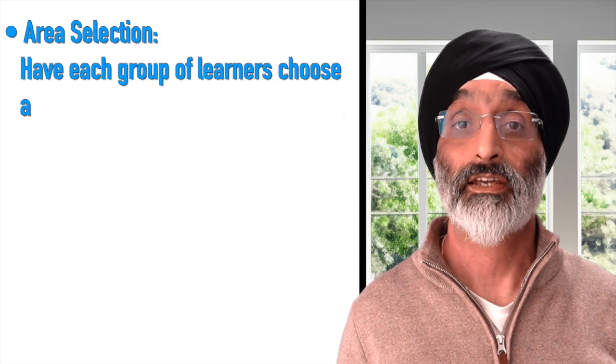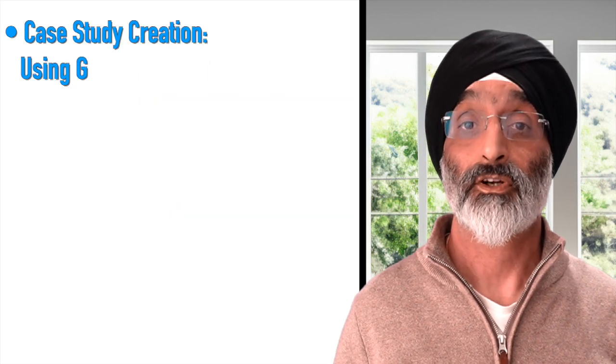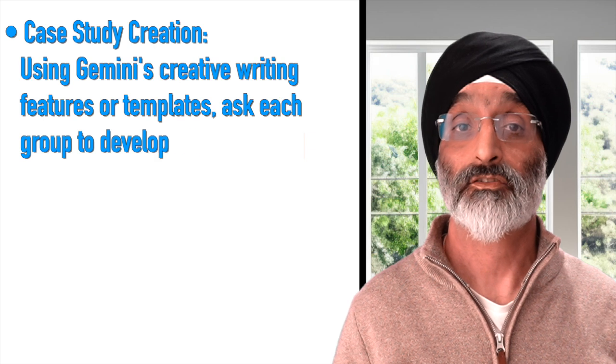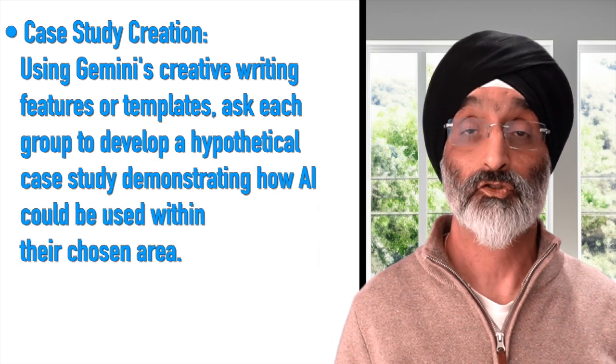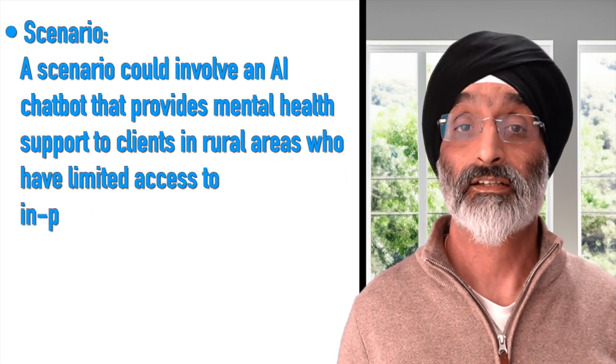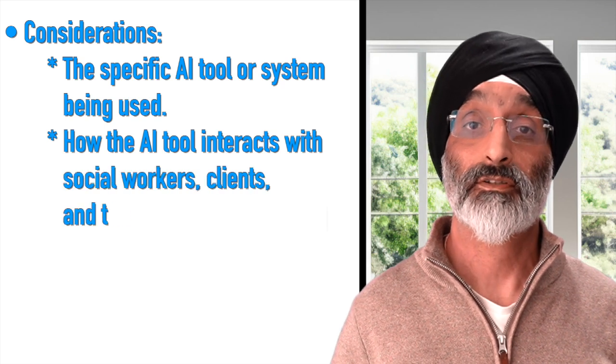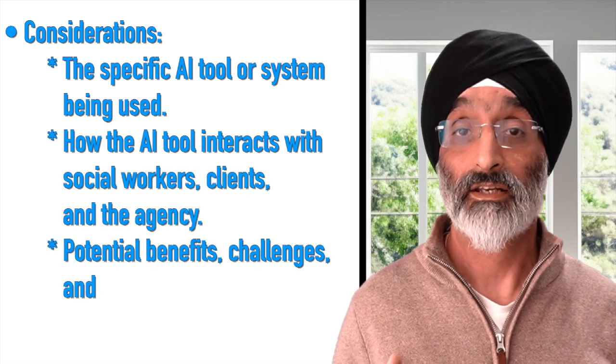Have each group of learners choose a specific area of social work practice like child welfare, mental health, elderly care, or criminal justice. Using Gemini's creative writing features, ask each group to develop a hypothetical case study demonstrating how AI could be used within their chosen area. The case study should present a realistic scenario where an AI tool or system is being implemented. For example, a scenario could involve an AI chatbot that provides mental health support to clients in rural areas who have limited access to in-person services. Another scenario could involve an AI system that helps social workers identify children who are at risk of abuse and neglect. Encourage students to consider the specific AI tool or system being used, how it interacts with social workers, clients, and the agency, and the potential benefits, challenges, and ethical implications.